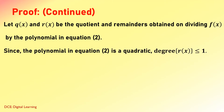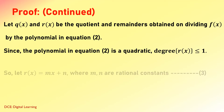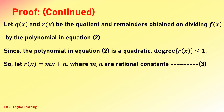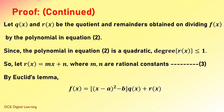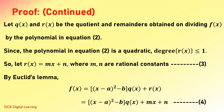Since the polynomial in equation 2 is a quadratic polynomial, the degree of the remainder R(x) is equal to or less than 1. So let R(x) = Mx+N, where M and N are rational constants, equation 3. By Euclid's division lemma, f(x) = ((x−A)²−B)·Q(x) + R(x), which equals ((x−A)²−B)·Q(x) + Mx+N, equation 4.